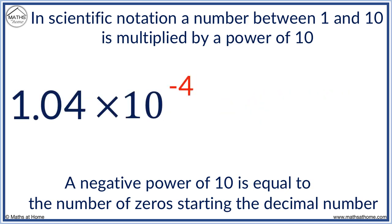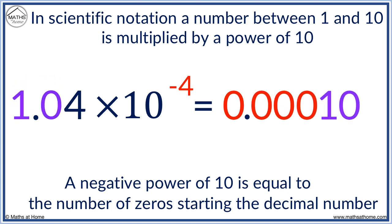Here is another example with a negative power of 10. We have four zeros, then a 1, a 0, then a 4.